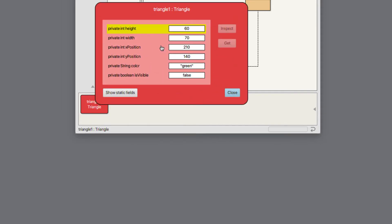What we see in the inspector are some integer data values, a string data value and a boolean or true-false data value. So the current set of values we see represented here are the current state of this triangle object.